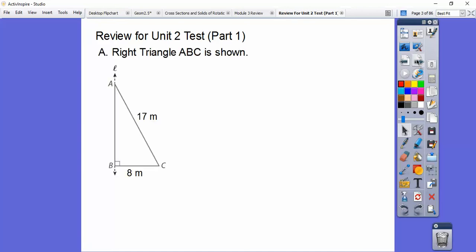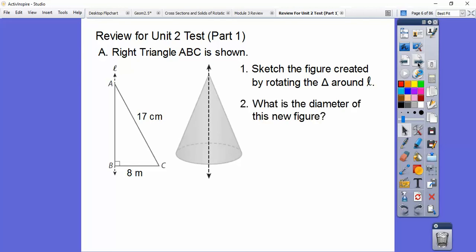Right triangle ABC is shown right there. Sketch the figure that's created by rotating the triangle around line L. If I rotate this around, it's going to make that cone right there. What's the diameter of this new figure? Well, this was 8 right there, which means this is 8 and that's 8. So the diameter would be 16.